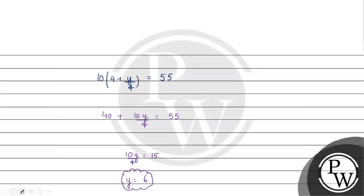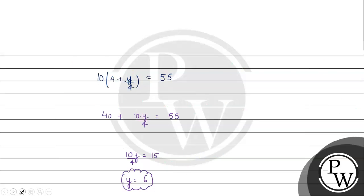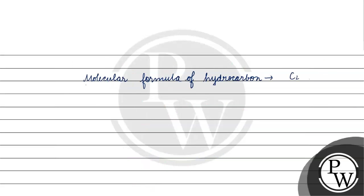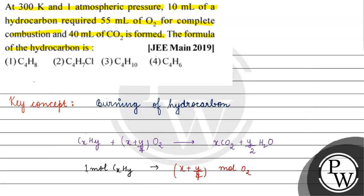So the molecular formula of the hydrocarbon is CₓHᵧ, where C = 4 and H = 6, giving us C₄H₆. Coming back to the question, the correct answer is Option 4. I hope you understood it well. Thank you and all the best.